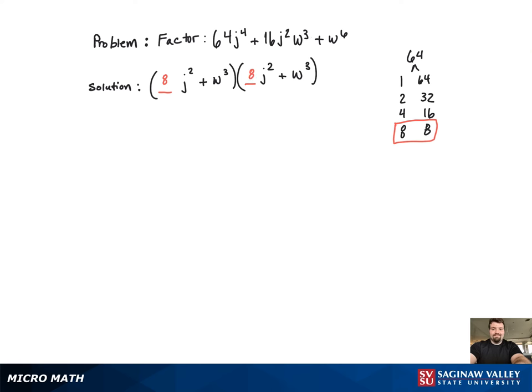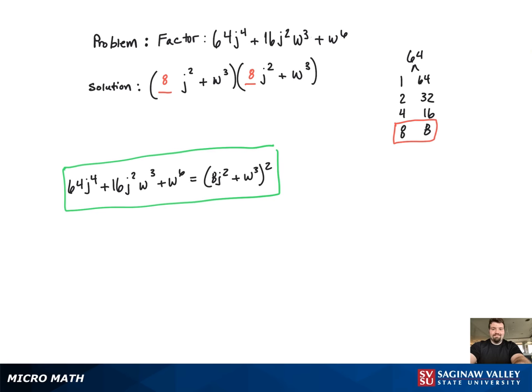So, that's the final factored version: 8j squared plus w cubed, all squared.